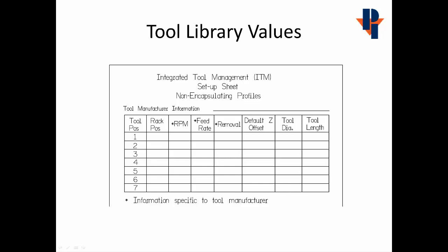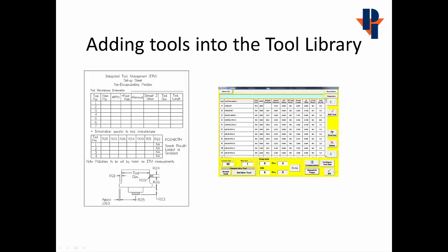The tool library values were filled out in video number one. Remember, the RPM, feed rate, and removal amount is information that is specific to the tool manufacturer. We're going to take the information from the ITM sheet and enter it into the tool library.